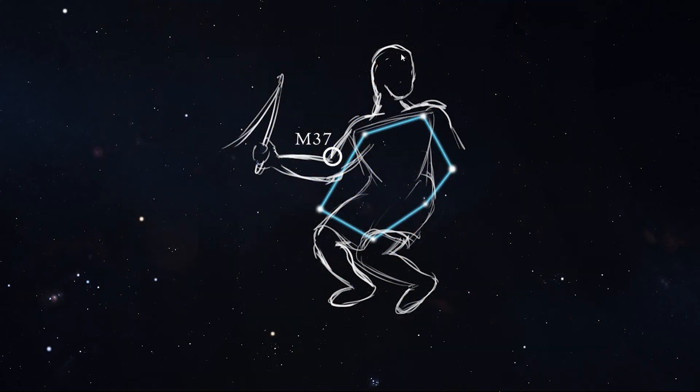So there you go. M37, both the furthest star cluster and the brightest in Auriga.